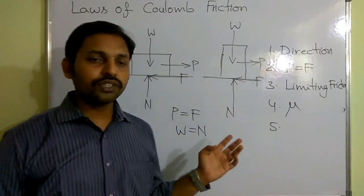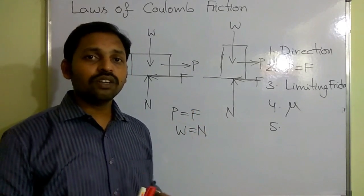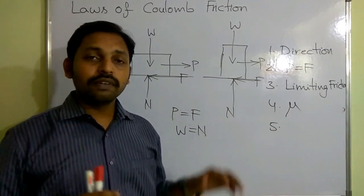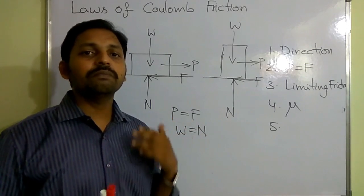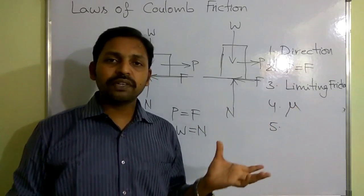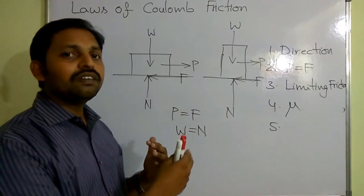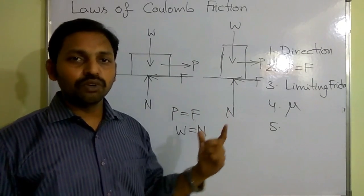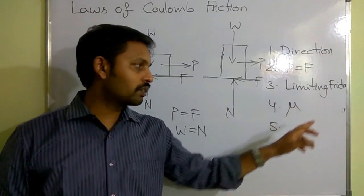So these are the laws of Coulomb friction or dry friction. The first law is about direction of frictional force — the direction of frictional force is always opposite to the direction of motion. The second law is about when the body is under the state of rest or in equilibrium — the applied force will be equal to the frictional force. The third law is limiting friction — limiting friction is the maximum value of frictional force experienced by the body. If we apply a sufficient amount of force, the body is able to attain motion, and at that point the body will have the maximum value of frictional force, which is nothing but limiting friction.